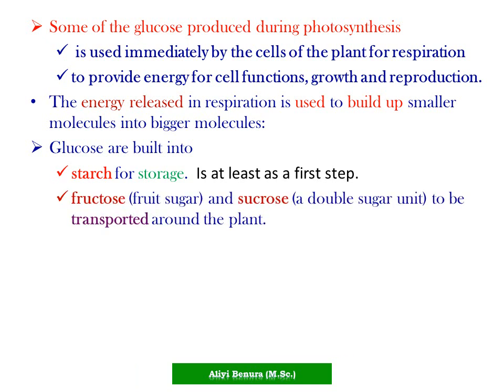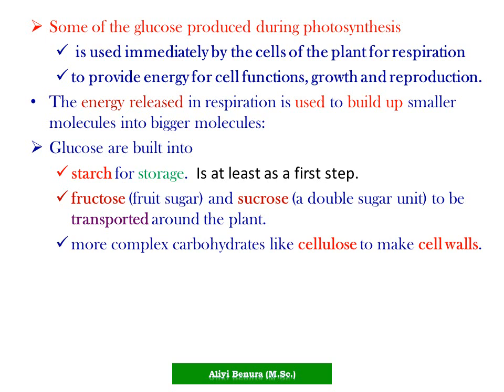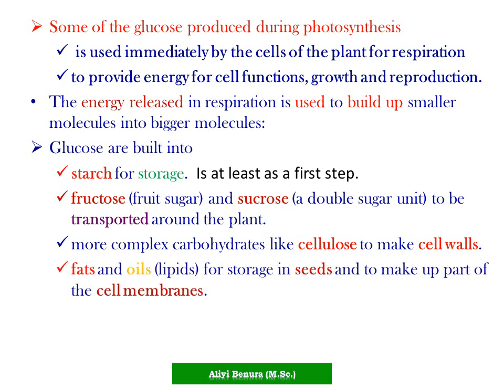Glucose is also built into fructose and sucrose. Fructose is a fruity sugar and sucrose is a double sugar unit that is transported around the plant. Glucose is also built into more complex carbohydrates like cellulose to make cell walls, and also into fats, oils, or lipids for storing in seeds and to make up part of cell membranes.